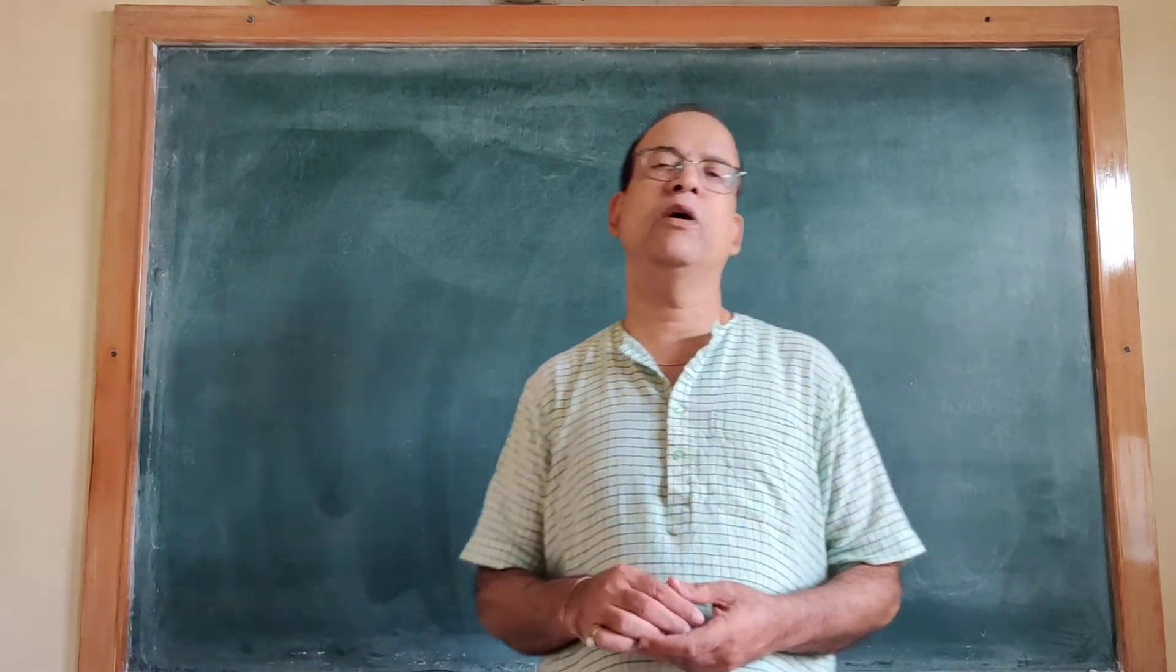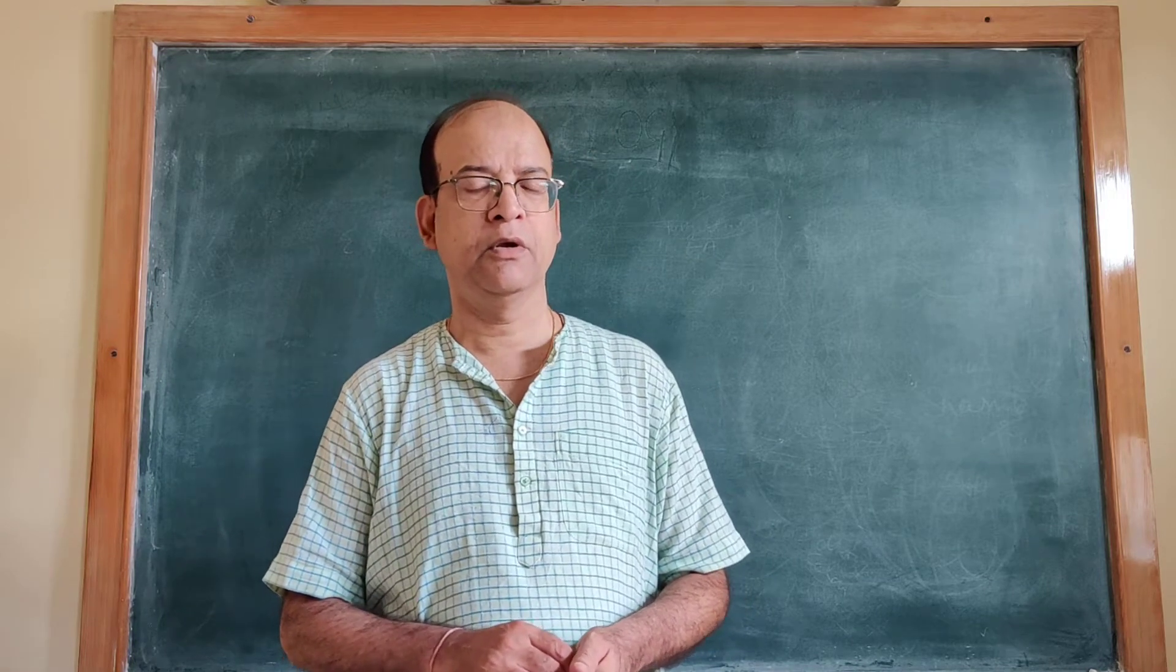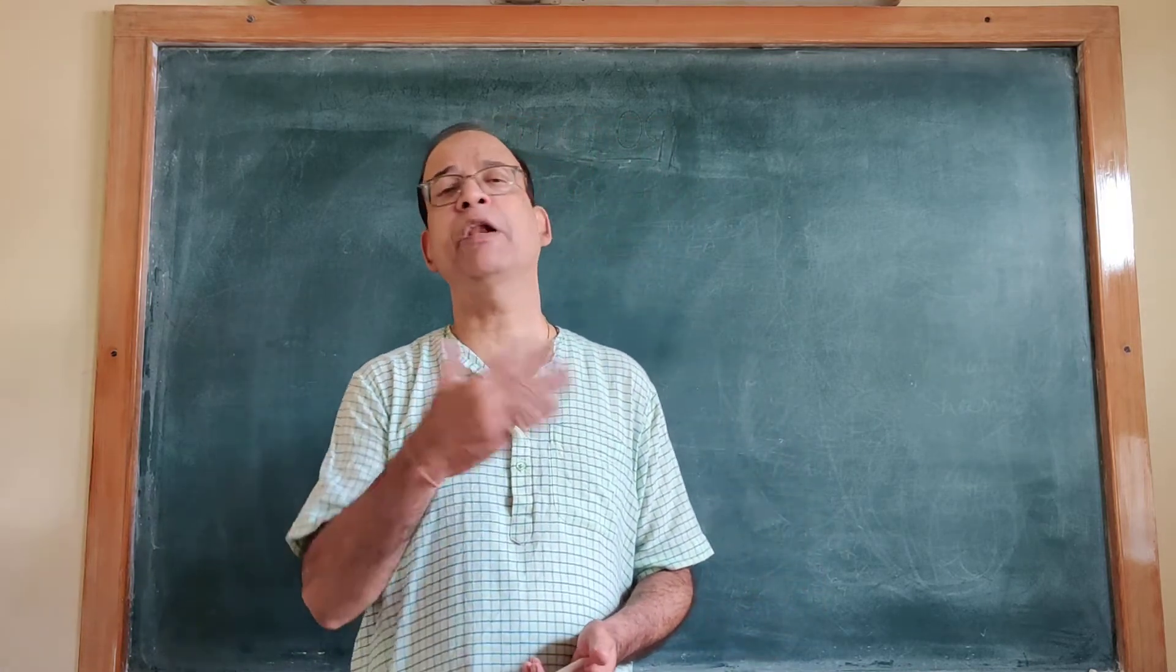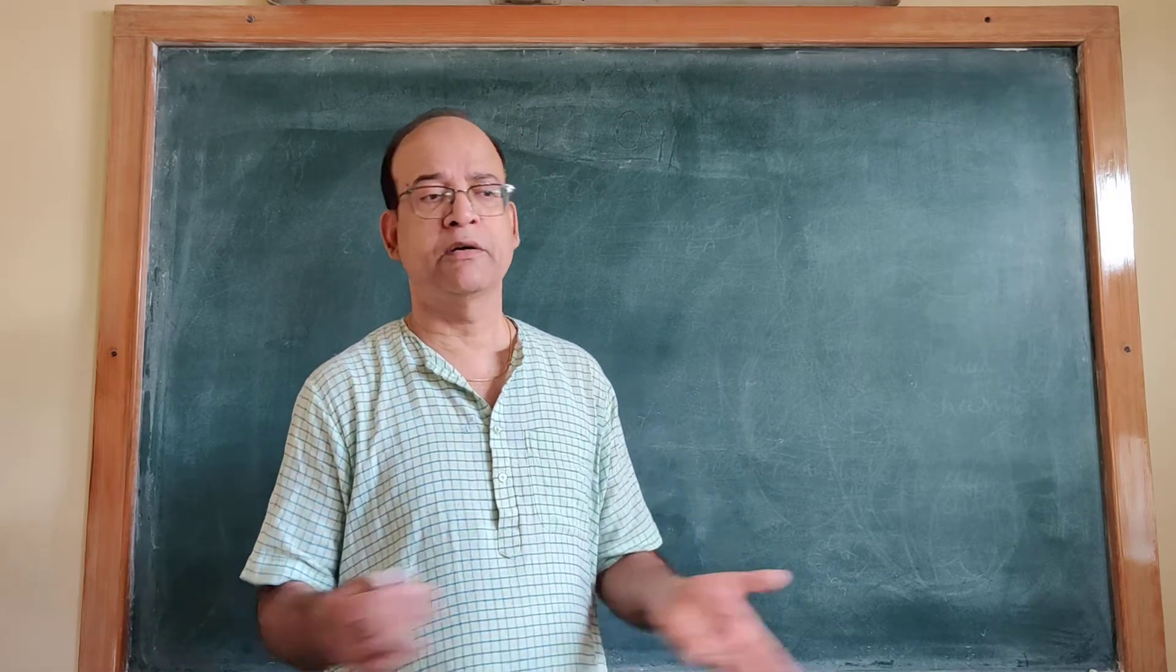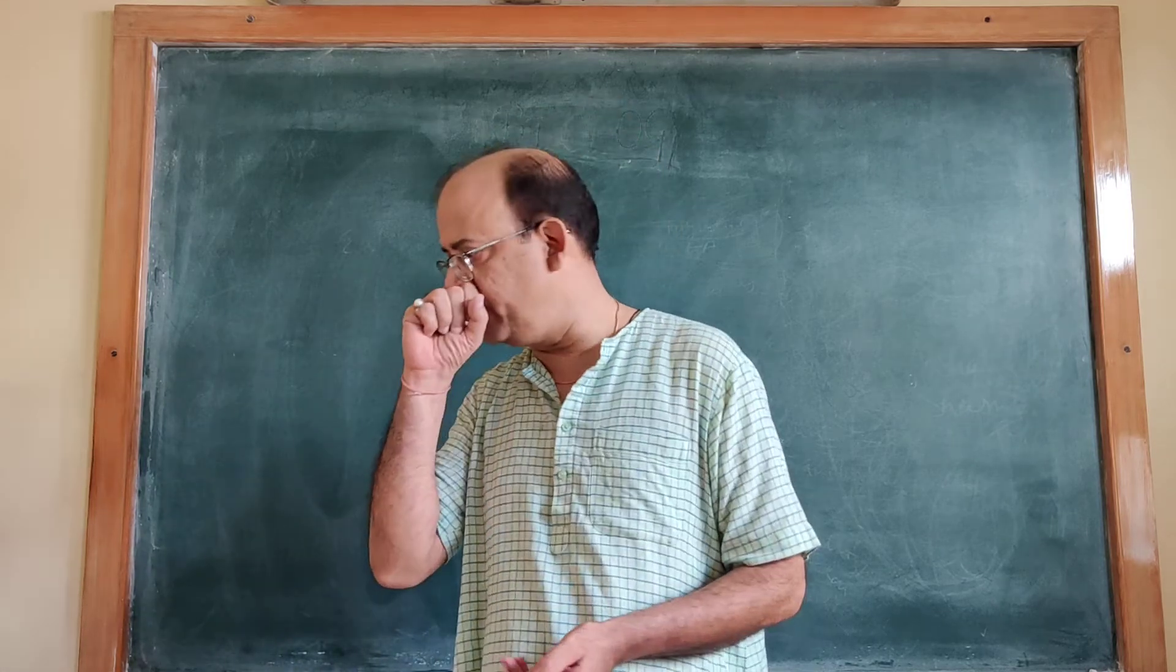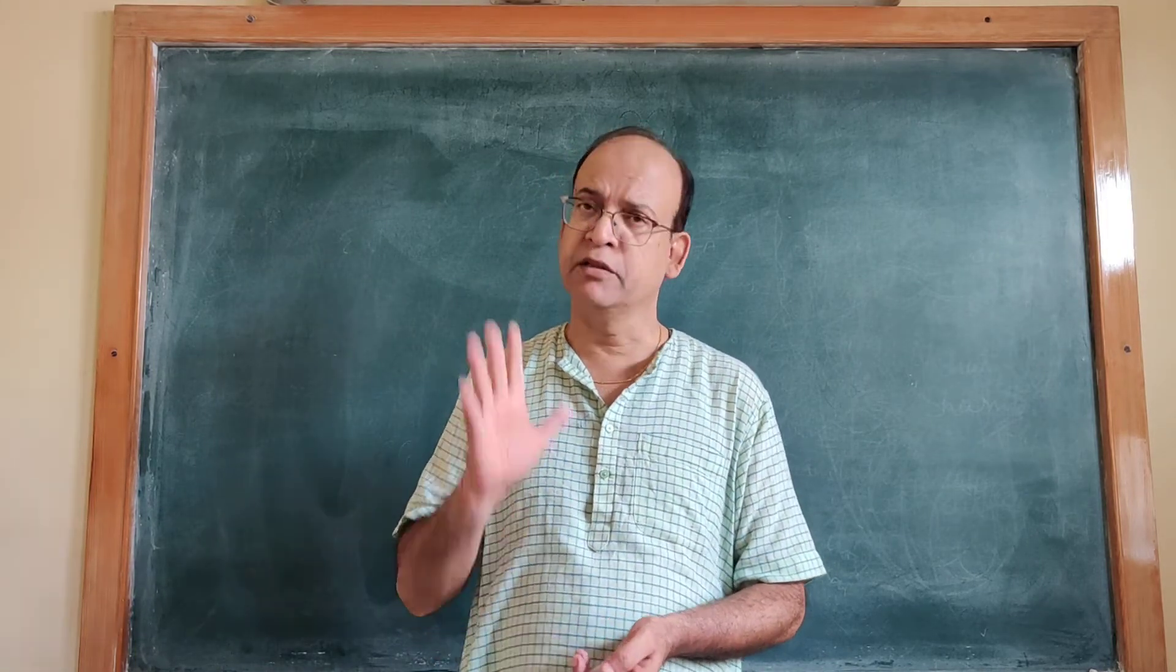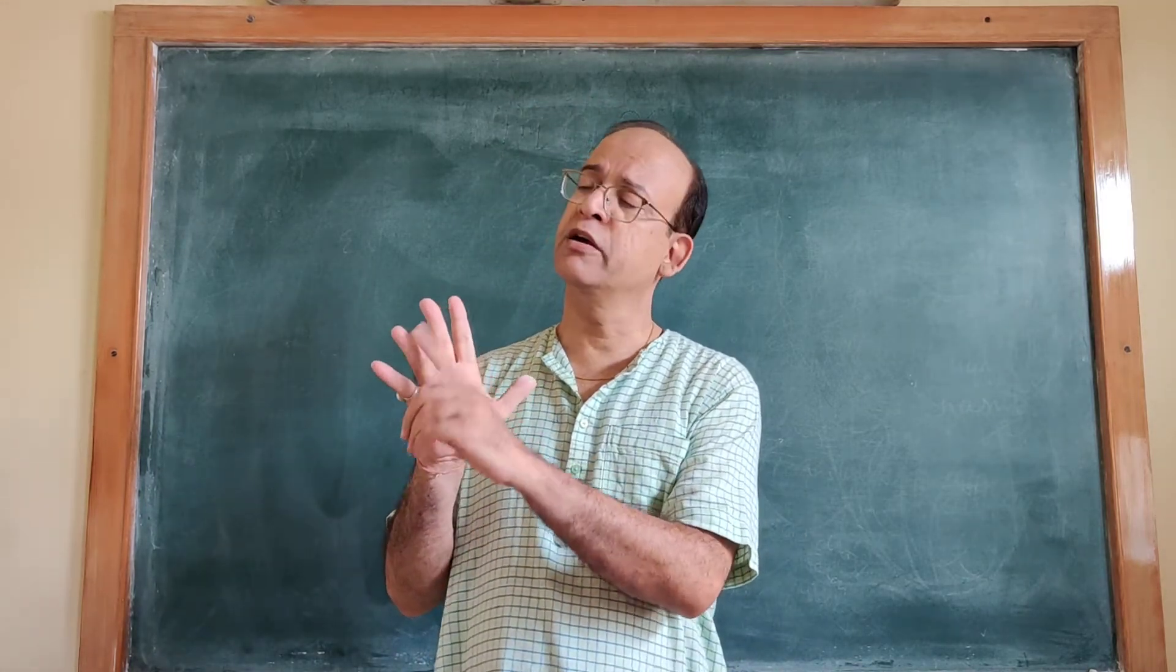Now I will explain the five kingdom system of classification. The previous system of classification was the two kingdom system, with one plant kingdom and one animal kingdom. But because of certain demerits, the two kingdom system was replaced by the five kingdom system of classification.